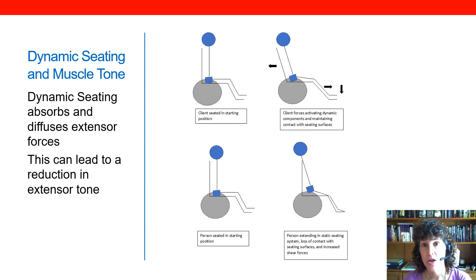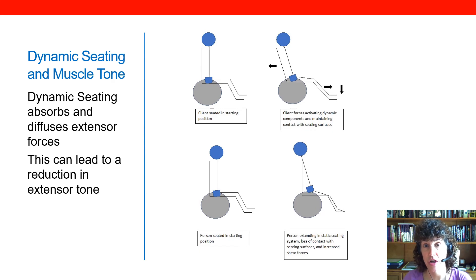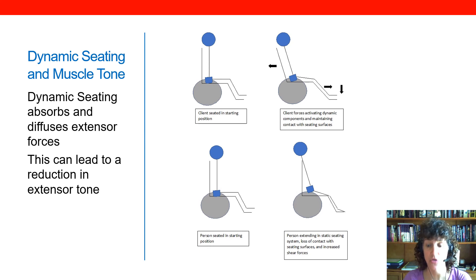So with static seating we have an increase in tone, a loss of position, and increased shear — as opposed to dynamic seating, where we have reduced extension, reduced shear, and better maintained contact with the seating surfaces.